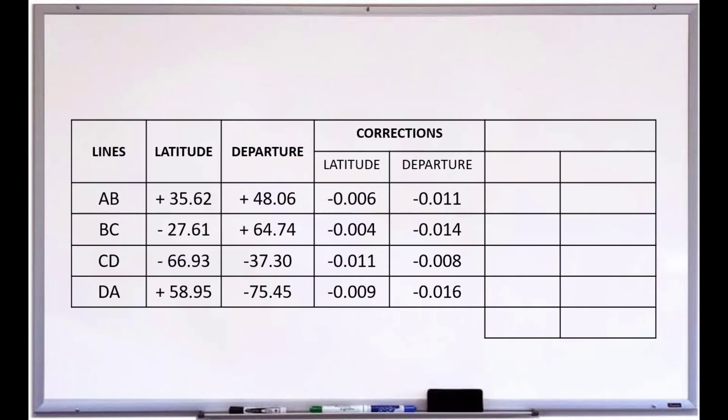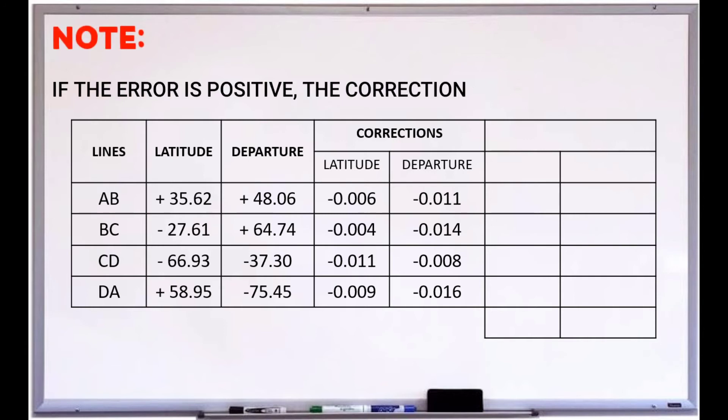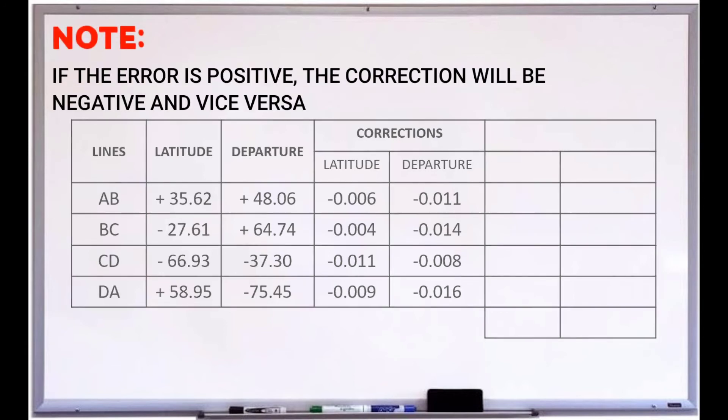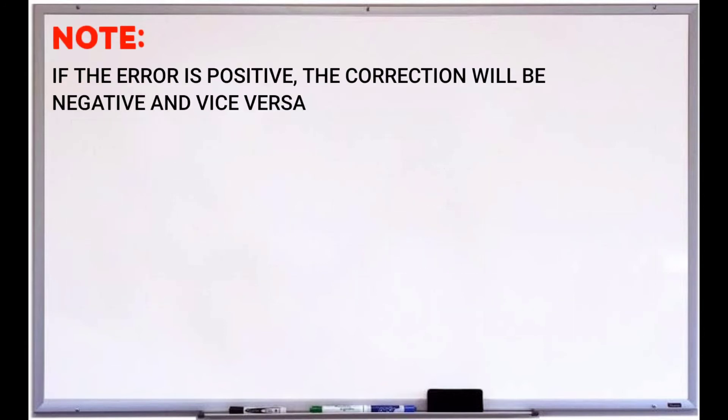We have already computed the corrections for each line of the latitude and departure. Now let's proceed to compute the new values of the latitude and departure. Note: if the error is positive, the correction will be negative, and vice versa.